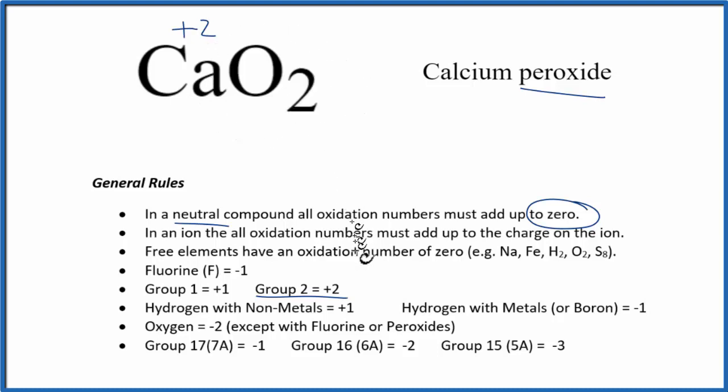We're normally used to oxygen having a minus 2 oxidation number, and usually it does, except with fluorine and then peroxides, and this is a peroxide.